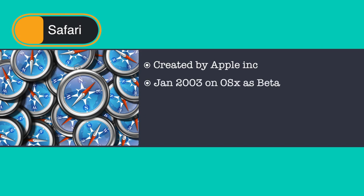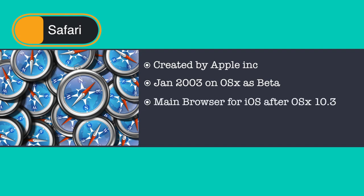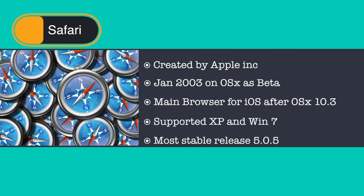Safari was first released as a public beta on January 7, 2003 on Apple's Mac OS X operating system. It became Apple's default browser beginning with Mac OS X version 10.3 Panther. Safari is also the main browser for iOS. There is also a version of Safari for Microsoft Windows which supports Windows XP and Windows 7. The most stable release is version 5.0.5, available as a free download for both Mac and Windows.